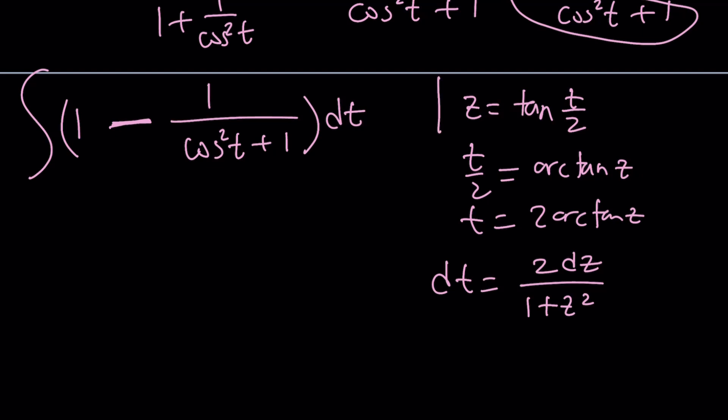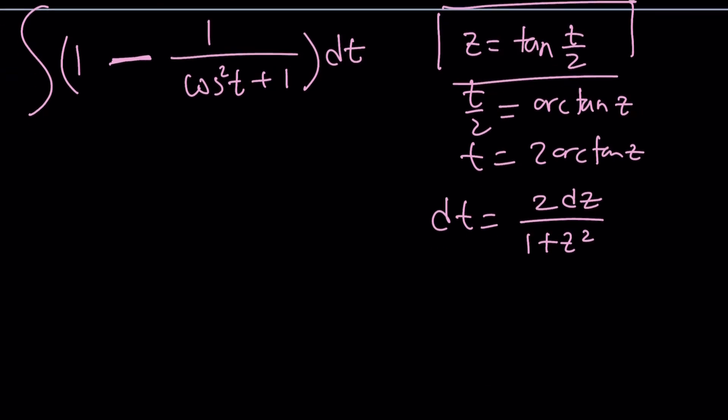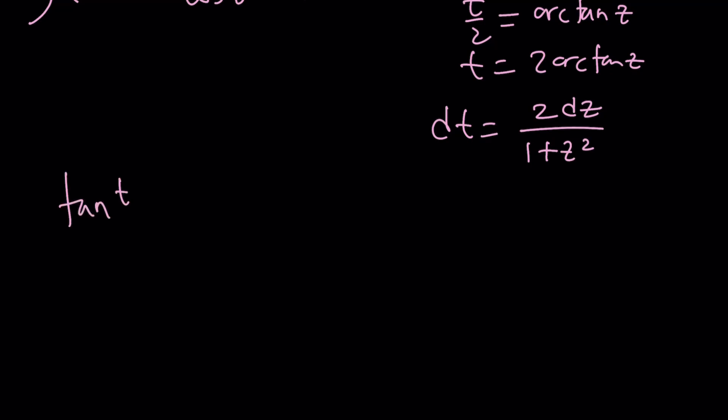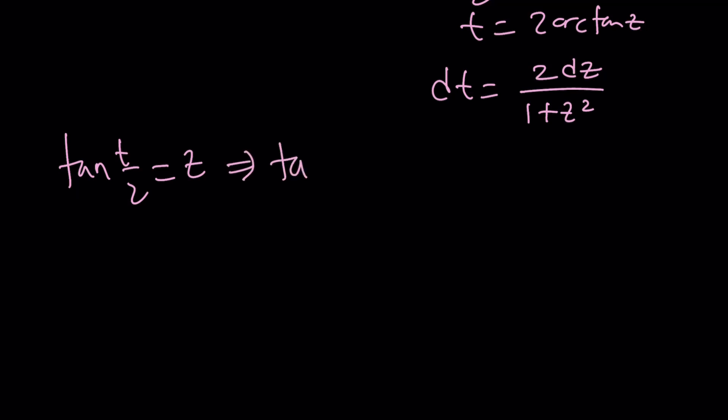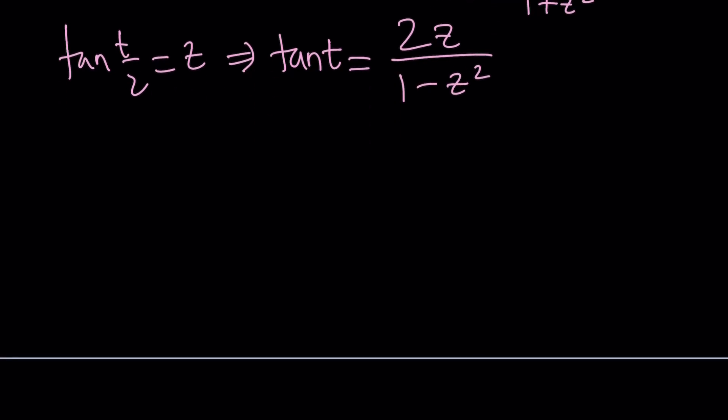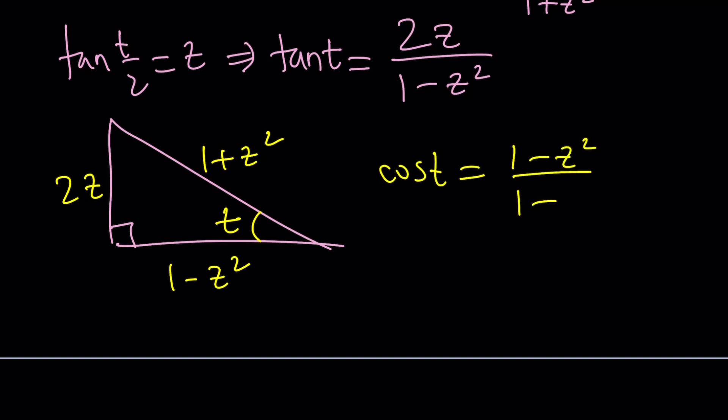The second thing we want to do is from tan(t/2), find tan t because you need cos t. You can draw a right triangle. If tan(t/2) = z, by double angle formula, tan(2α) = 2tanα/(1 - tan²α). Now we can draw a right triangle with these values. And since I'm looking for cos t, that will be (1 - z²)/(1 + z²).